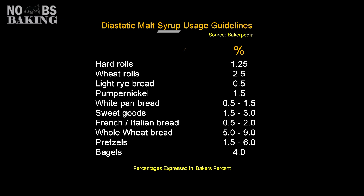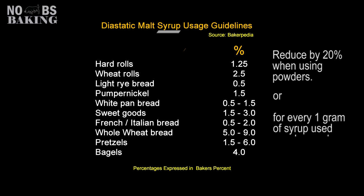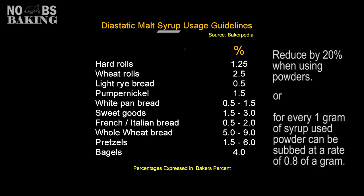Here are some basic guidelines provided by Bakerpedia that seem to be good ranges and starting points when using enzyme-active malt syrup. Note that the whole wheat rolls and bread recommendation is higher than many others, because whole wheat flour contains more bran and germ which can interfere with enzymatic activity during fermentation, so an additional boost is commonly added. These percentages reflect malt syrup; if you opt for powder, the recommendation is to reduce the amount used by about 20% — so for every gram of syrup, use 0.8 of a gram as a guideline for powder. But always check your product, as they often give recommended usages on the package.